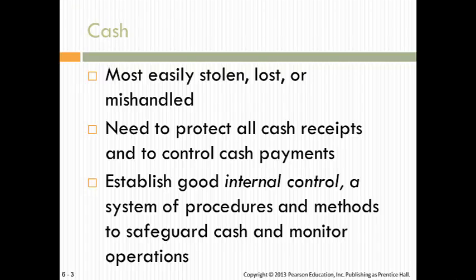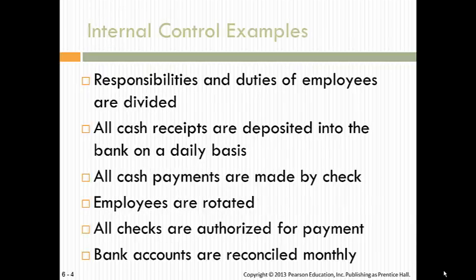Cash is probably the most easily stolen or mishandled. Nowadays a lot of transactions happen where cash isn't involved, but there still is a great deal of cash transactions, especially in the retail business. You need to protect all cash receipts and establish good internal controls. Internal control examples include: responsibilities and duties of employees are divided — referred to as separation of duties; cash is deposited on a daily basis; cash payments are made by check; employees are rotated; checks are authorized for payment; and bank accounts are reconciled monthly.